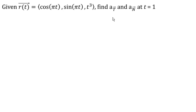Given this vector function, we want to find the tangential and normal components of the acceleration vector at time 1. And for that, we're going to use the formulas that were given in the book. Now, both of these involve the velocity vector and the acceleration vector, so we need to find those.